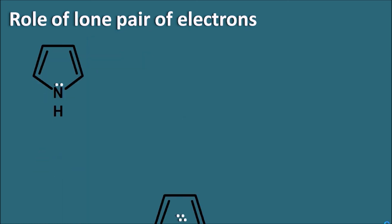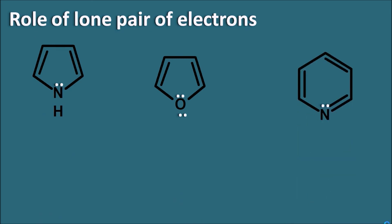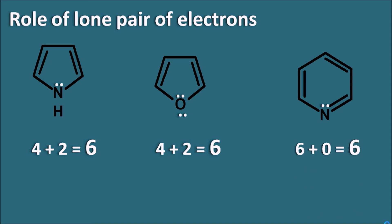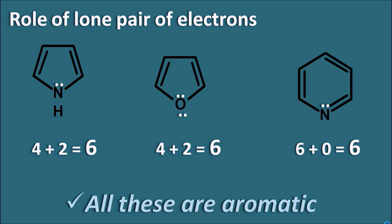Looking at heterocyclic compounds with heteroatoms: pyrrole has 4+2 = 6 electrons participating in the pi cloud; furan also has 4+2 = 6 electrons — even though it has two lone pairs, only one participates in resonance while the other is outside the pi cloud. In pyridine, only the pi bonds contribute 6 electrons and the lone pair is not involved in resonance. All three heterocyclic systems have 6 electrons in resonance, matching the 4n+2 rule, and are therefore aromatic. Lone pair electrons can contribute to conjugation and render molecules aromatic.